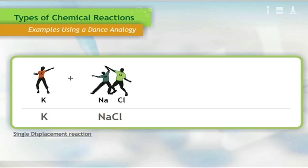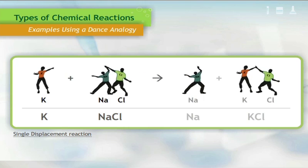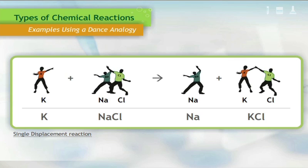An example of a single displacement reaction is potassium, K, being added to sodium chloride, NaCl. The potassium switches places with the other positive element, sodium. The resulting products are sodium, Na, and potassium chloride, KCl.